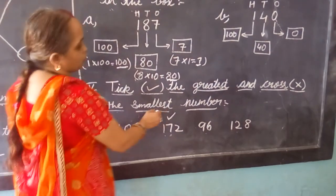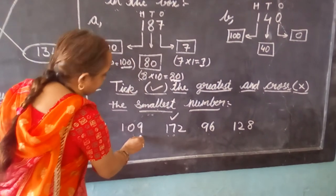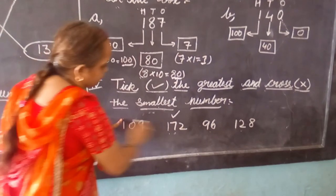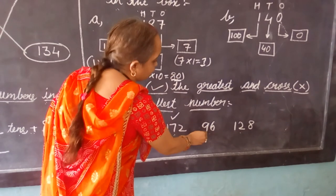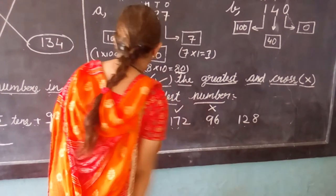Now come for smallest. Smallest, we have to cross it. Here it is 100, here over 100, and here it will be 96. So we have to cross 96.